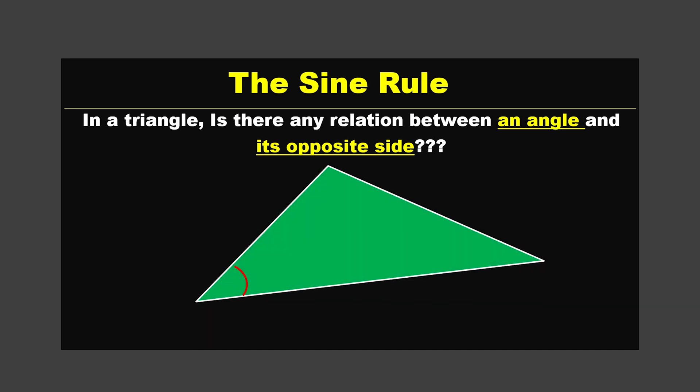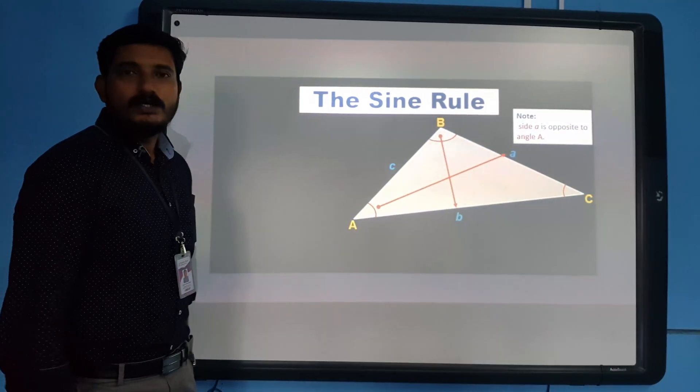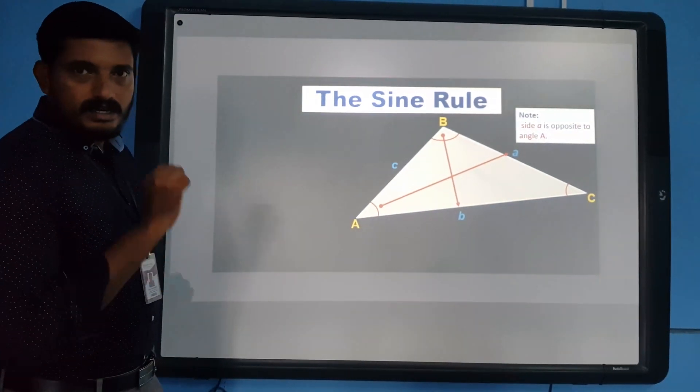In this triangle, an angle is given as 40 degrees, and the side opposite to the angle has a length of 8 centimeters. What will happen if the size of the angle increases — if 40 becomes 50, 60, or 70 — what change will happen to the opposite side? Will it increase or decrease? It will increase. So as the size of the angle increases, the opposite side increases, and as the angle decreases, the side decreases as well. There definitely exists a relationship between the side and the angle of any triangle.